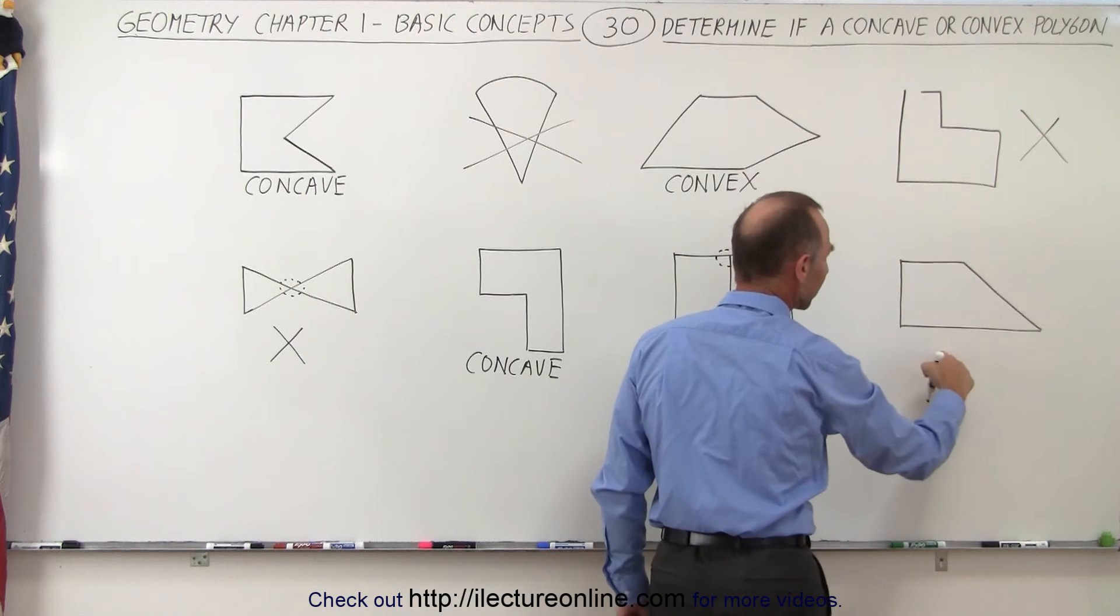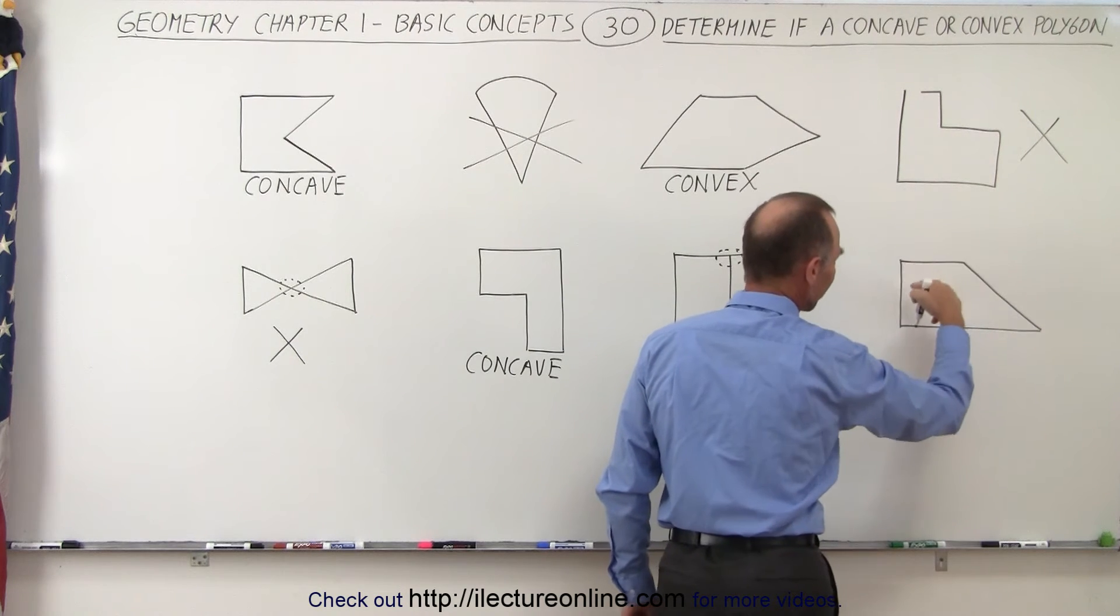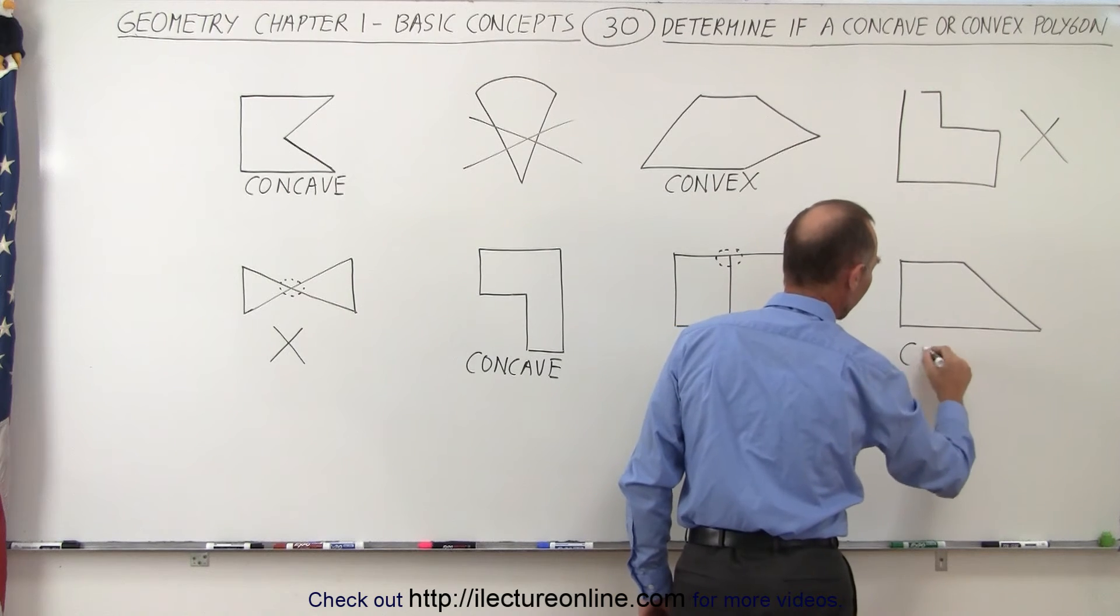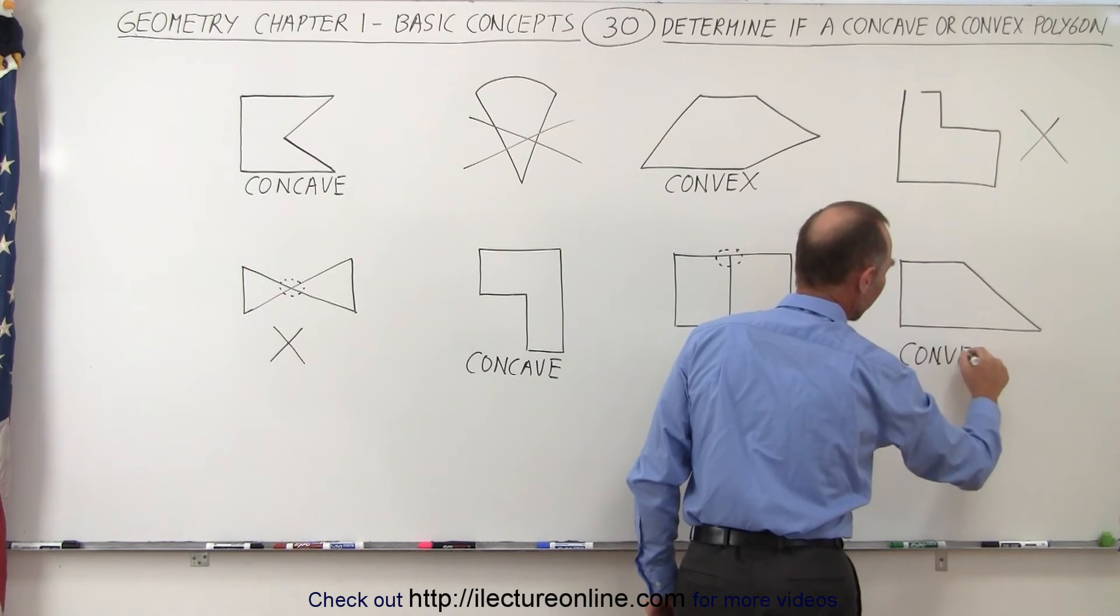And finally, this has to be a polygon because we have all nice line segments. There's no multiple connections and no cave-in, so this is called a convex polygon.